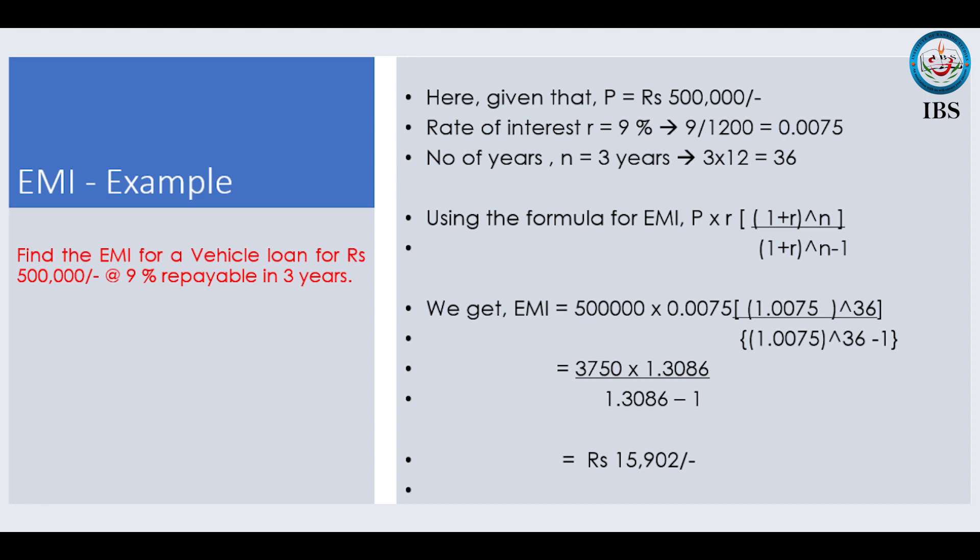So we have P as 5 lakh, R as 0.0075, and N is the number of installments. This loan is repayable in 3 years at monthly installments, so 3 years means 36 monthly installments. N takes the value 36. Substituting in the formula: 5 lakh into 0.0075 into (1.0075) raised to 36, divided by (1.0075) raised to 36 minus 1. On simplification, you get 3750 into 1.3086 divided by 1.3086 minus 1, which gives the answer 15,902. Therefore, the monthly installment of this loan is Rs 15,902.